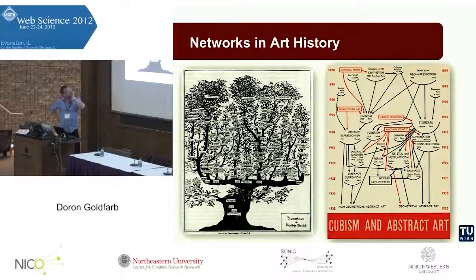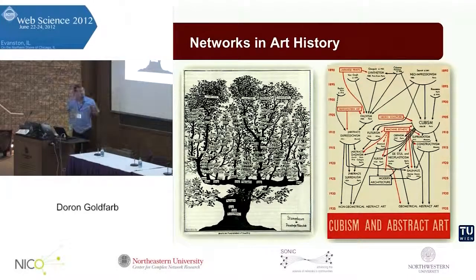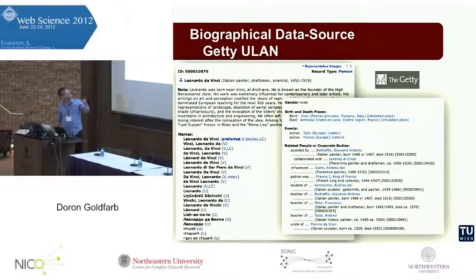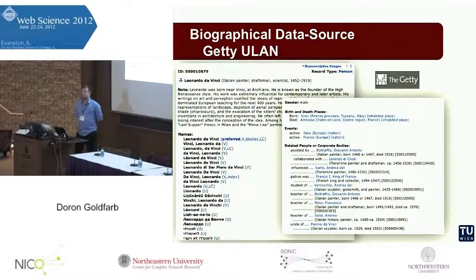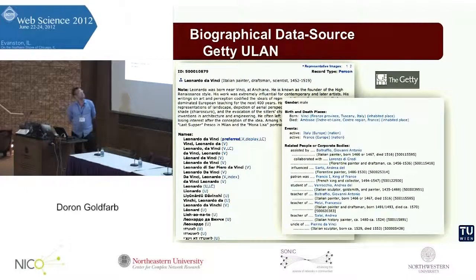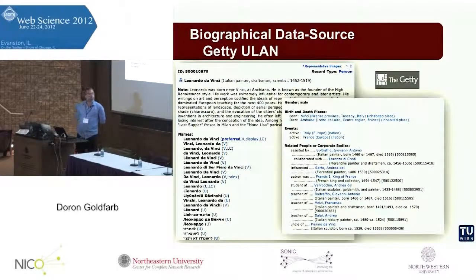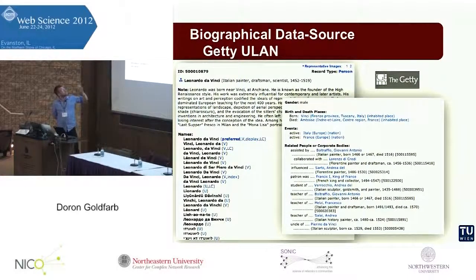We started thinking about how it would be interesting to mediate or communicate such artist or artist-patron relationships, and we were looking for a data source that could more or less deliver such information. One of the first data sources we looked at was the Getty Union List of Artist Names. It is provided by the Getty Foundation, which has a research institute that develops four different kinds of vocabularies dedicated to the annotation of art history artifacts, and one of these is the Union List of Artist Names.